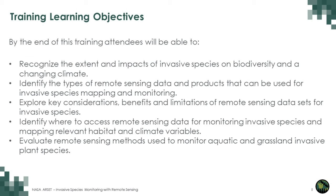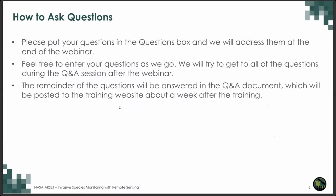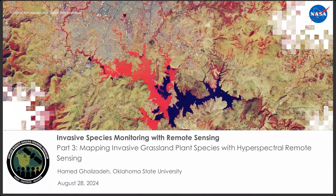In part two, we covered remote sensing methods used to monitor aquatic invasive species. And in this final piece of the series, we will cover grassland invasive plant species. If you have any questions, please put them in the questions box at the bottom right — there are three dots and you can click that to type in your question. Feel free to enter questions as we go; we will try to get to all of them during our Q&A session after the webinar.